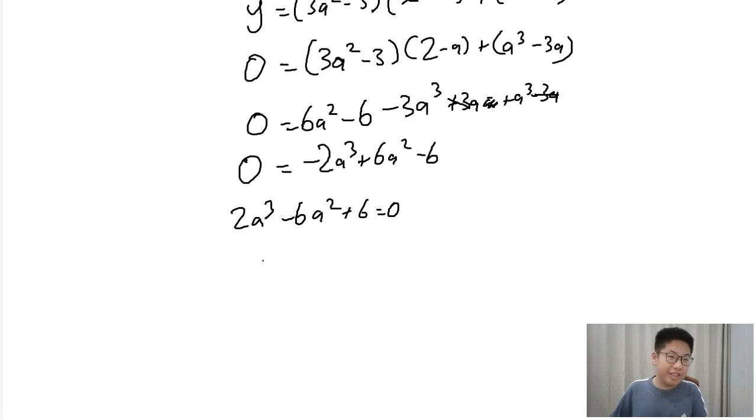So now we're going to do the differentiation. Great, so dy over dx equals 3, actually 6a squared minus 12a.